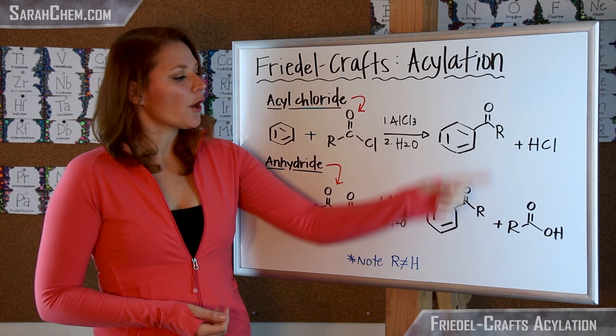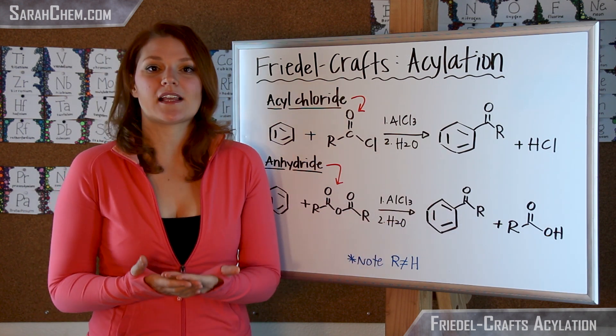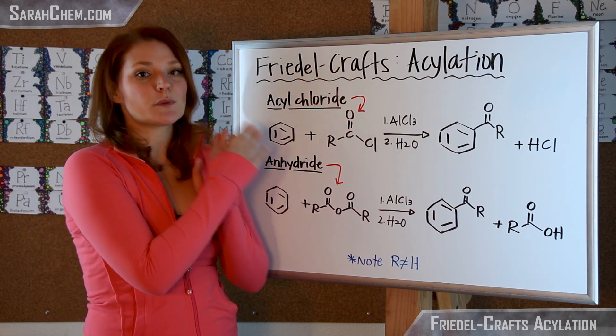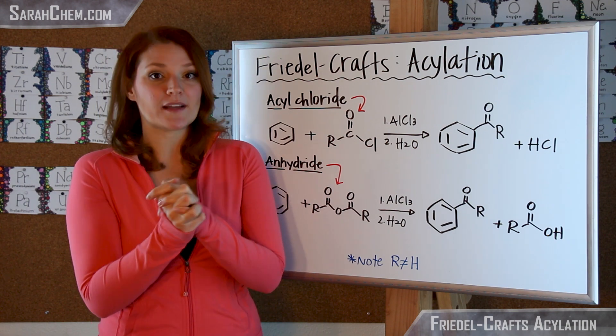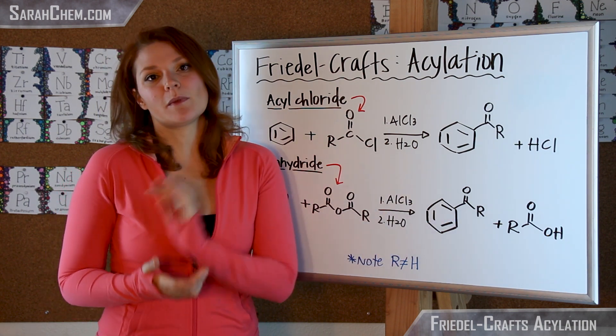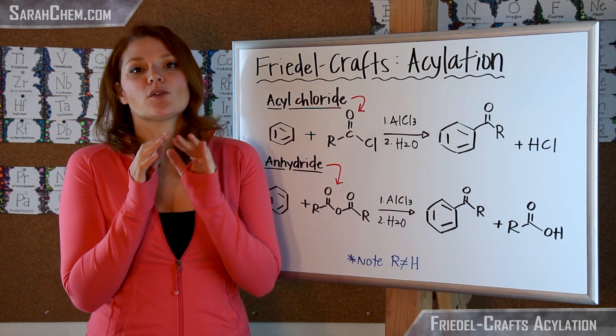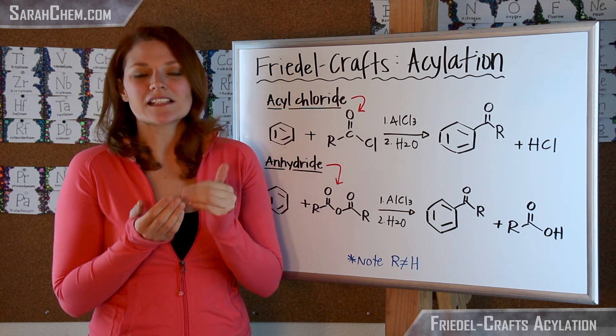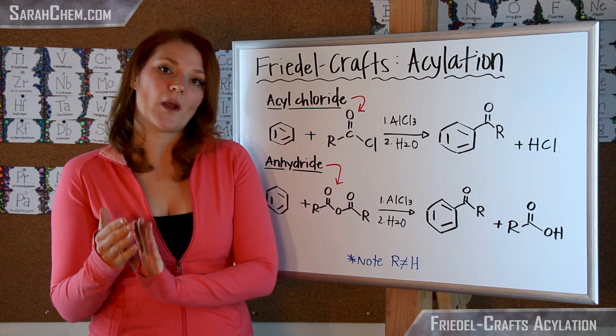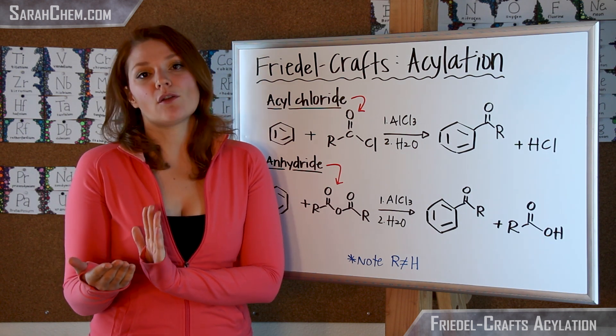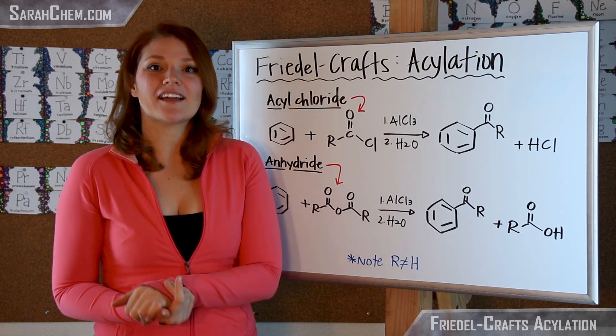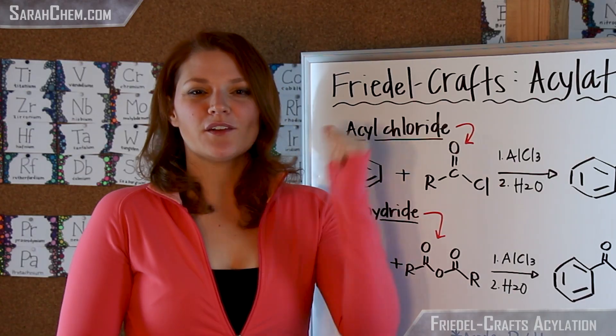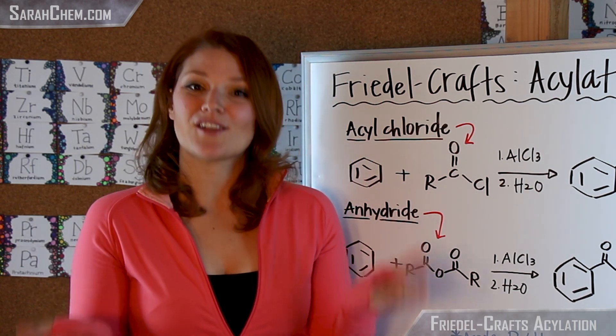One note I do want to make is that this R group oftentimes can represent a hydrogen. In this case with the Friedel-Crafts acylation it's not going to be, because if this was a hydrogen you'd be making a benzaldehyde, and you'd essentially need to have a very unstable intermediate to react with, so you'll find that there's a different way that you go in order to make your benzaldehyde group, and we'll look at that at the end of the video. So let's first take a look at the mechanism for the cases where R is not hydrogen.